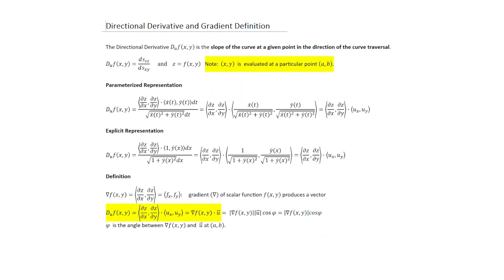The directional derivative gives the actual physical slope when moving in a particular direction. Depending on which direction you go, you see a different slope. More precisely, it is the slope of the curve at a given point in the direction of the traversal — that is, the path projected onto the XY plane.